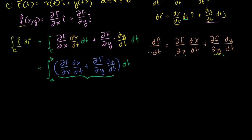By pattern matching with the multivariable chain rule: the derivative of any function with respect to t is the partial with respect to x times dx/dt, plus the partial with respect to y times dy/dt. That expression in blue is exactly the derivative of uppercase F with respect to t. So the whole integral equals the integral from a to b of dF/dt dt.